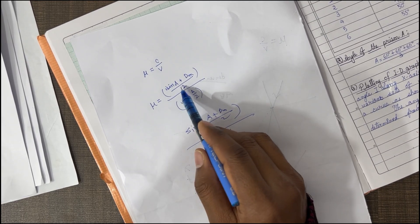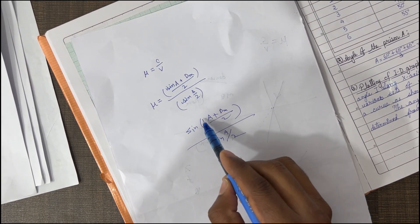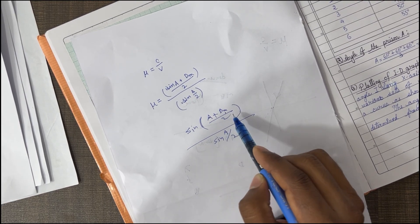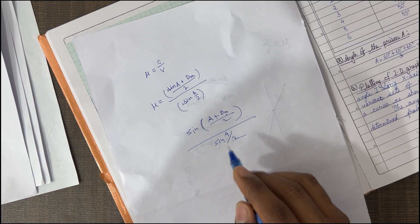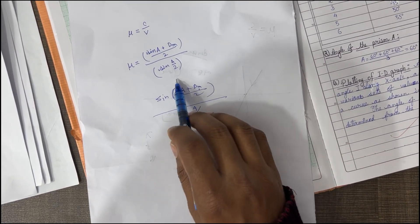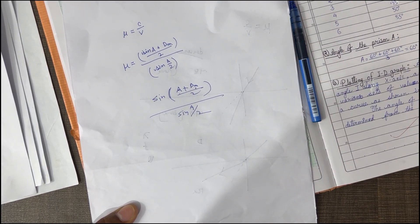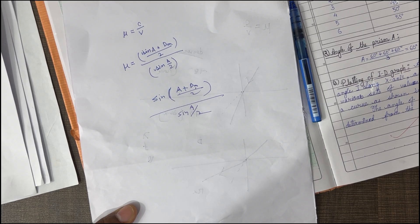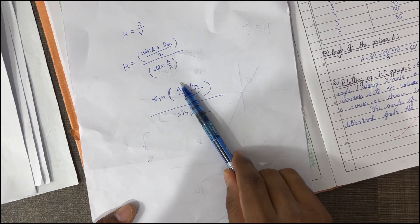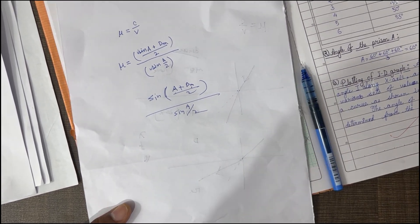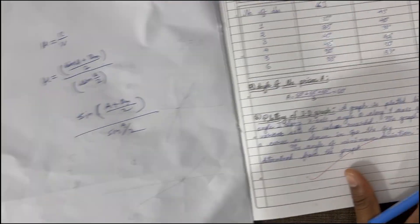What kind of prism have you used? A triangular prism. For an equilateral triangular prism, what is the value of A? 60 degrees.